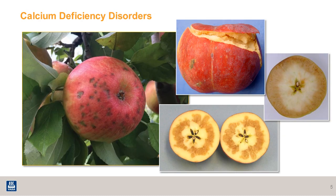Calcium deficiency disorders can come in many different forms. The most common one that apple growers will encounter is bitter pit. But it can also cause softness in the fruit, internal breakdown, and water core breakdown.